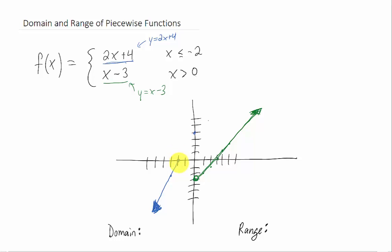Okay, so what's left? Well, this function turns out to just be this piece, this blue piece right here combined with this green piece right here. Notice we left an open hole here at x equals 0 because we didn't have an equal sign on this 0 here. Now we just have to look at the graph and figure out what is the domain and what is the range.